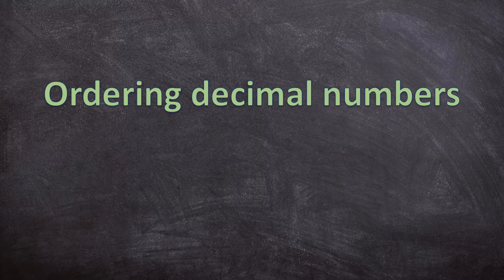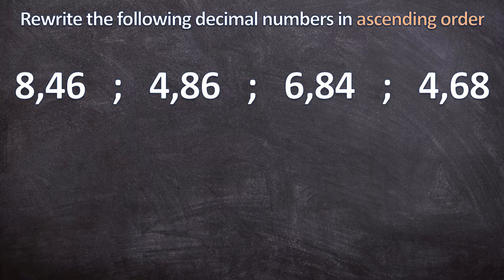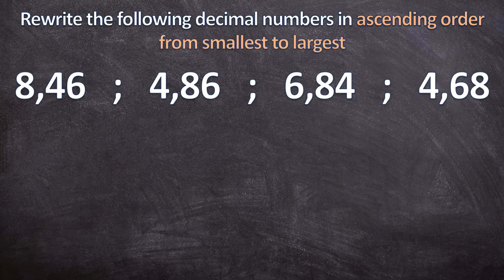Now let's go on and order decimal numbers. You now know how to see which decimal number is bigger than the other, so you can order a few decimal numbers in the correct order. We're going to rewrite these four decimal numbers in ascending order, which means from smallest to largest. We compare them the same way we did earlier in the video.